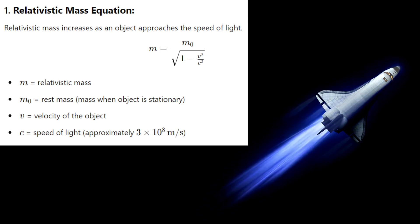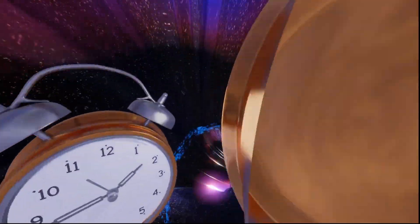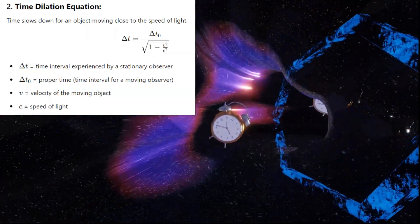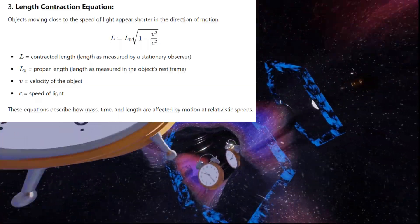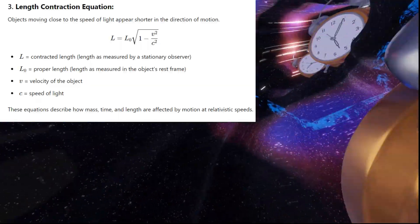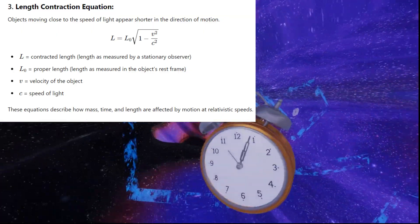which is practically impossible. Einstein also showed that space and time are linked. As you approach the speed of light, time slows down for you, and distances shrink. This makes it harder to go faster and faster.